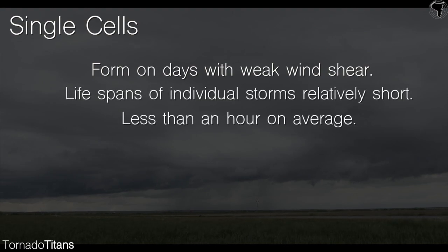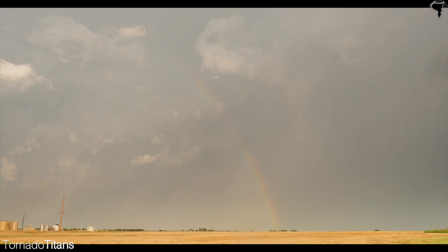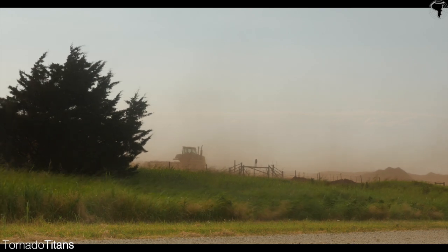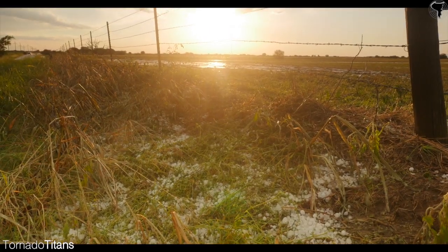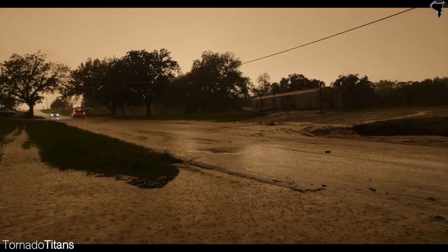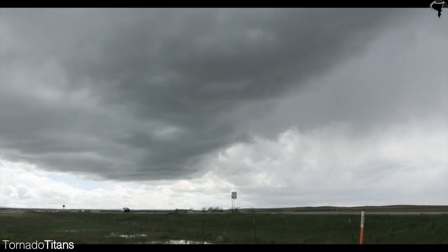They oftentimes have relatively random formation patterns. While severe weather is least likely with these types of storms versus others, pulse storms can easily produce severe downburst winds, small hail, heavy rain, and even brief and weak tornadoes.